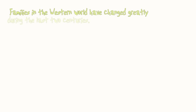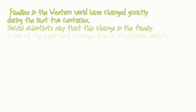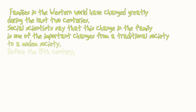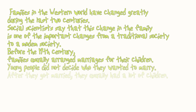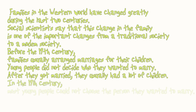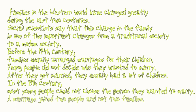Families in the Western world have changed greatly during the last two centuries. Social scientists say that this change in the family is one of the important changes from a traditional society to a modern society. Before the 19th century, families usually arranged marriages for their children. Young people did not decide who they wanted to marry. After they got married, they usually had a lot of children. In the 19th century, most young people could not choose the person they wanted to marry. A marriage joined two people and not two families.